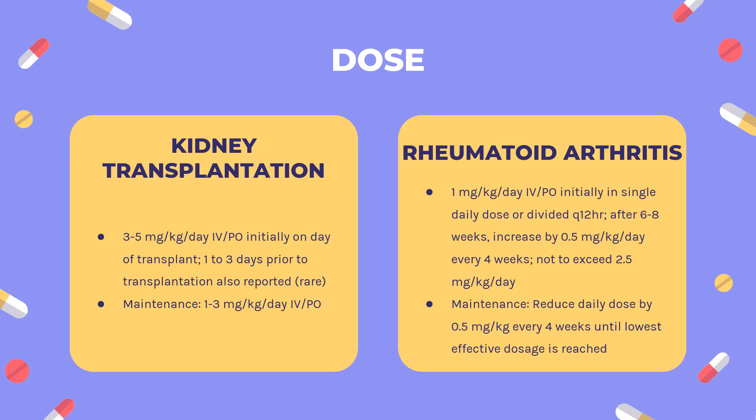Rheumatoid arthritis: 1 mg/kg/day orally, initially in a single daily dose or divided every 12 hours. After 6–8 weeks, increase by 0.5 mg/kg/day every 4 weeks, not to exceed 2.5 mg/kg/day.